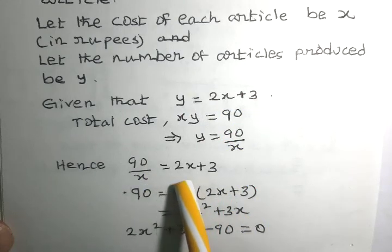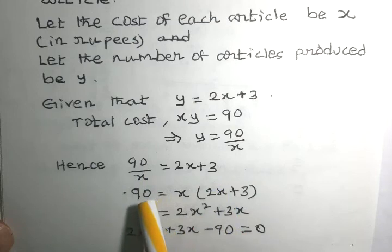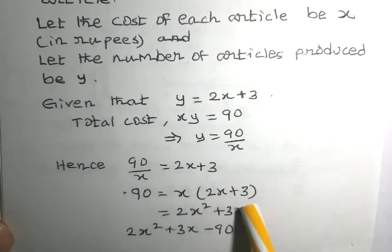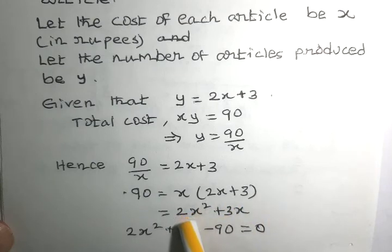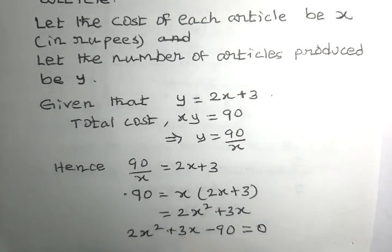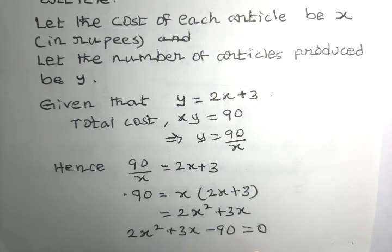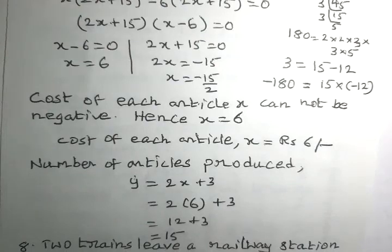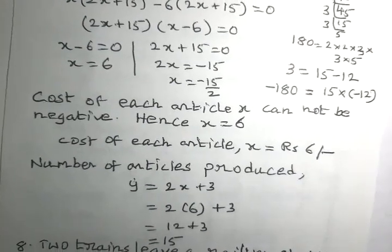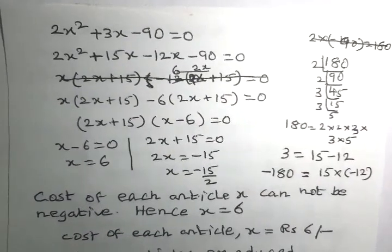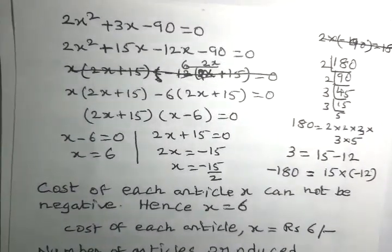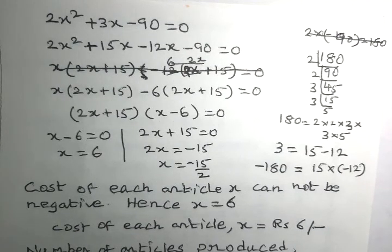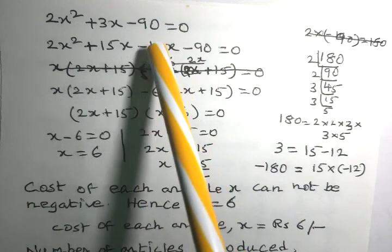Setting 90 divided by x equal to 2x plus 3, we get 90 equals x multiplied by 2x plus 3, which gives us 2x squared plus 3x minus 90 equals 0. We now have a quadratic equation in x.